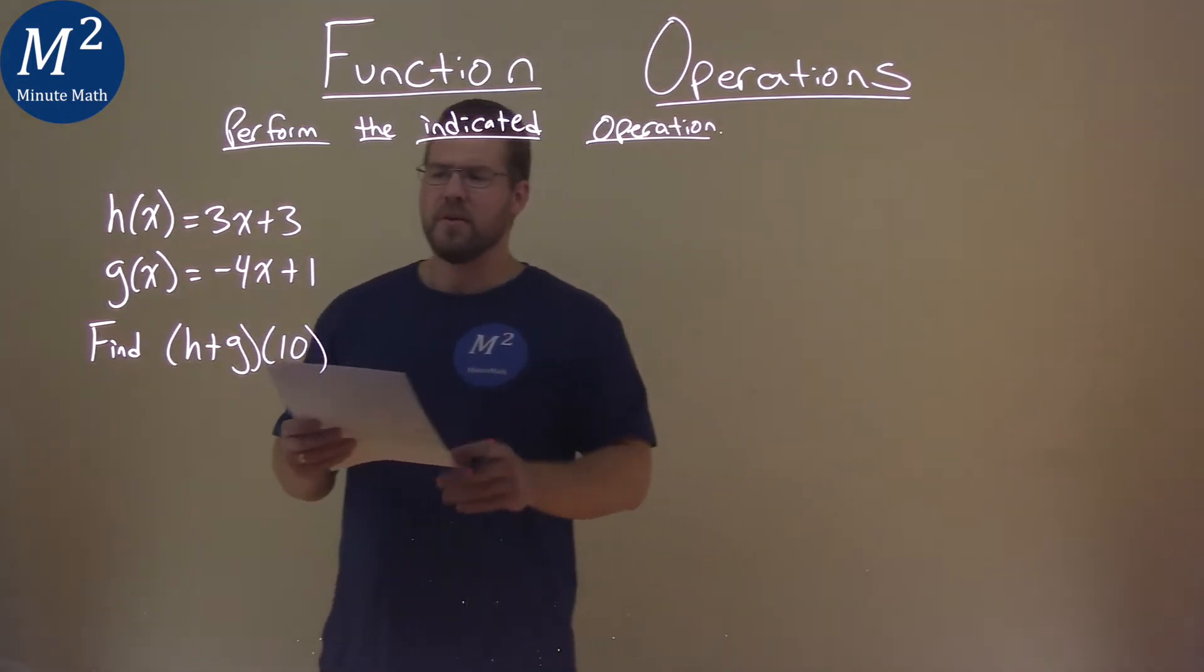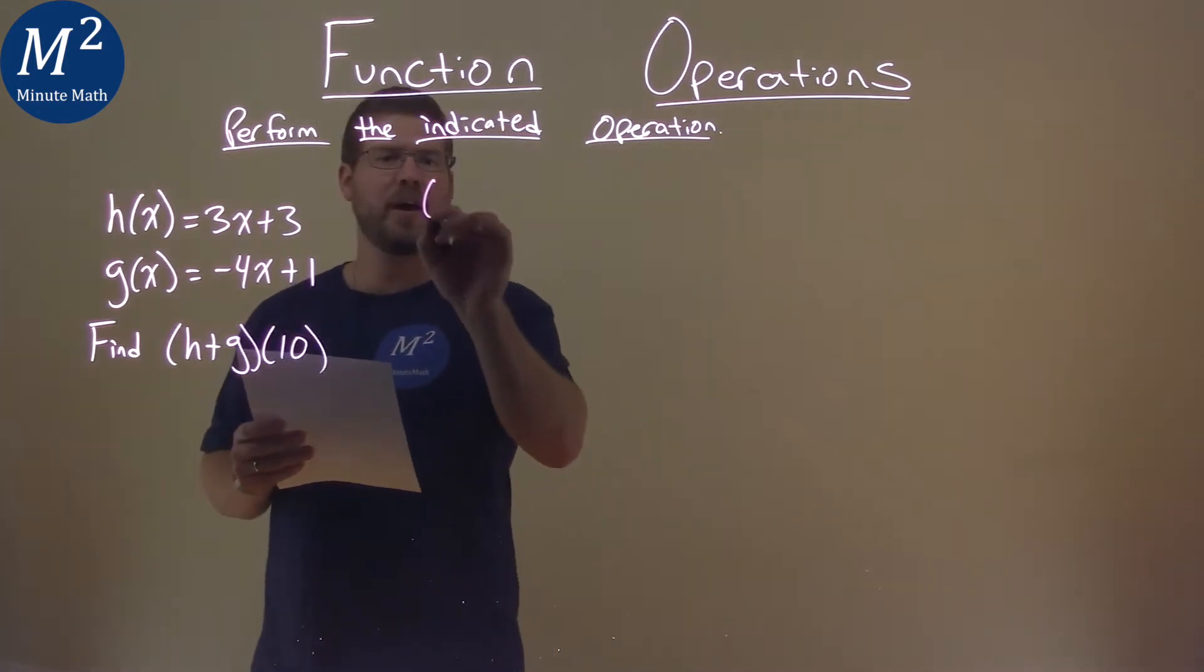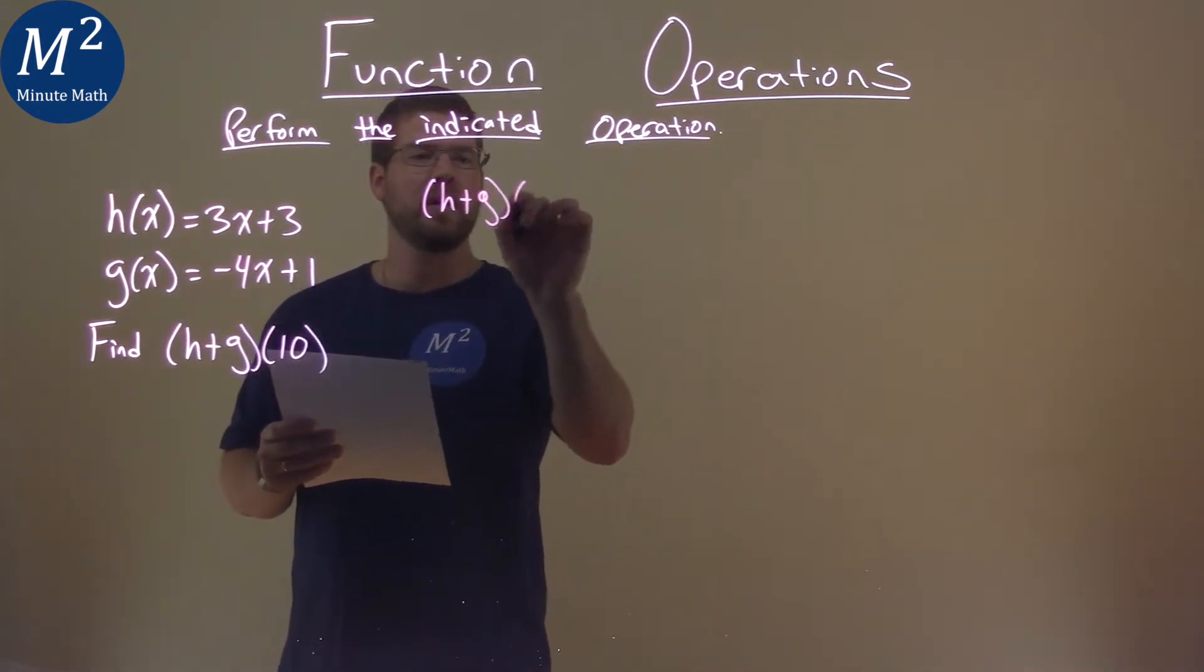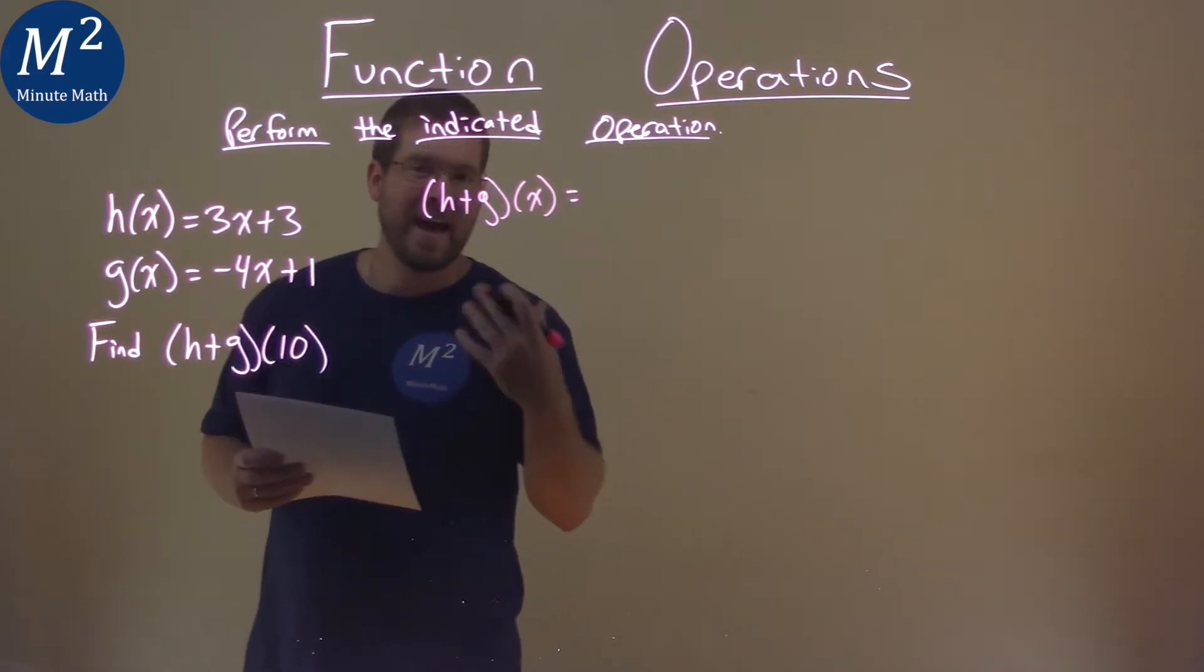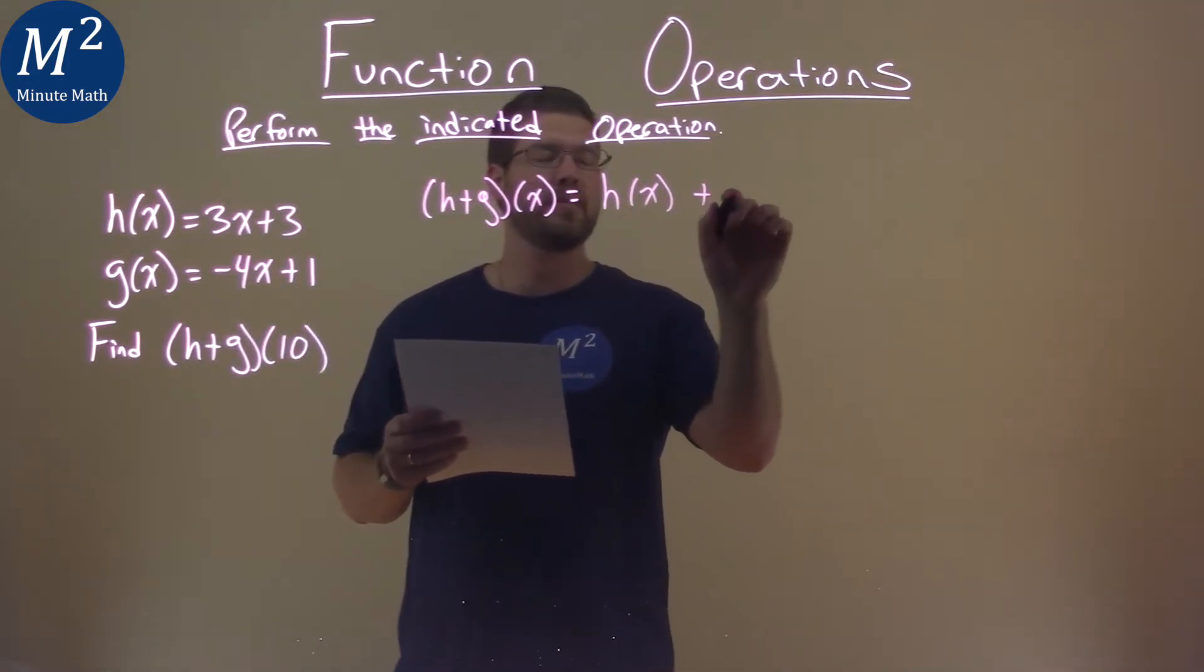First thing I want to do is find what is (h+g)(x). So to do that, I have my (h+g)(x), and I'm going to add my two equations. I'm going to add h(x) here plus g(x).